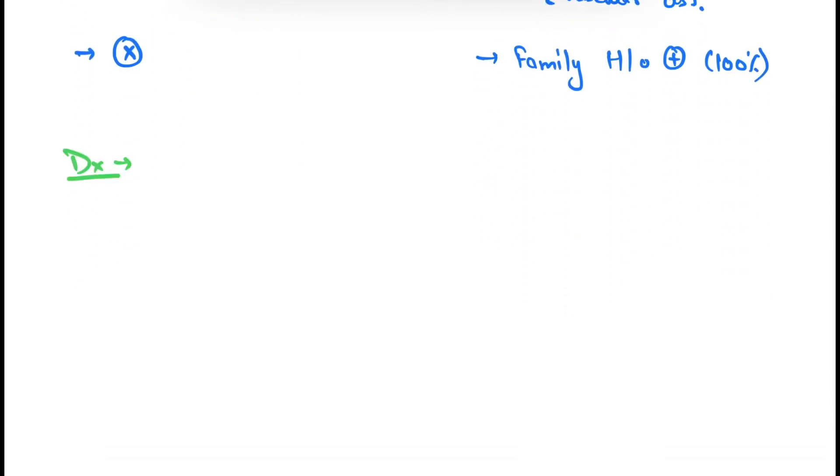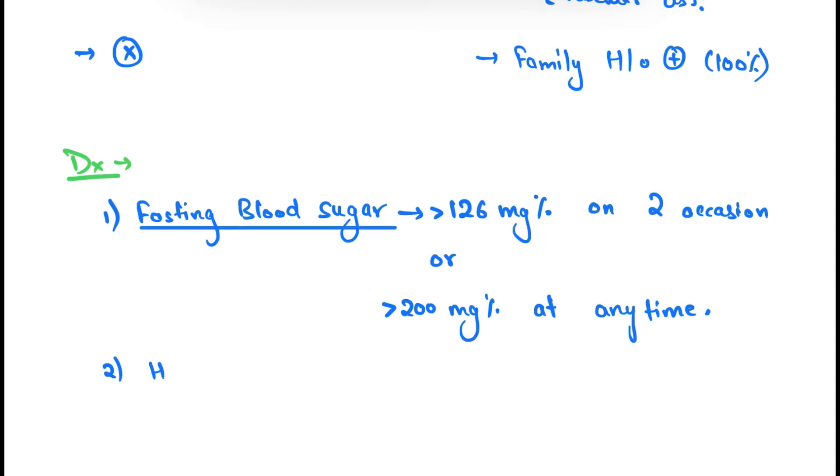Now coming to the diagnosis. How to diagnose diabetes mellitus in a patient? You have to do fasting blood sugars. The fasting blood sugars should be more than 126 milligram percent on two occasions, or more than 200 milligram percent at any time. You can either do fasting blood glucose level or HbA1c. If you find HbA1c more than 6.5%, then this is diagnostic for diabetes mellitus, and this tells about the last 3 months average of sugar levels.